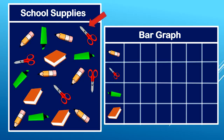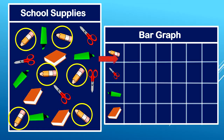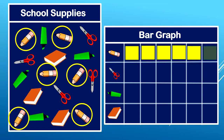Let's come over to our school supplies picture and count each of our objects. Let's start with the pencils. One, two, three, four, five, six. I count six pencils — that means we need to fill in six sections next to the pencil in our bar graph. Right here: one, two, three, four, five, six.